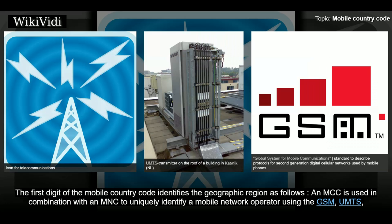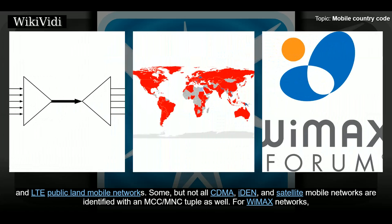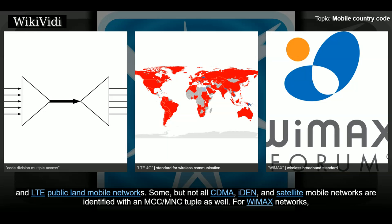The first digit of the mobile country code identifies the geographic region. An MCC is used in combination with an MNC to uniquely identify a mobile network operator using the GSM, UMTS, and LTE public land mobile networks. Some, but not all, CDMA, iDEN, and satellite mobile networks are also identified with an MCC/MNC tuple.